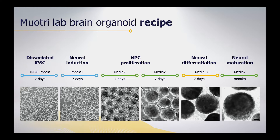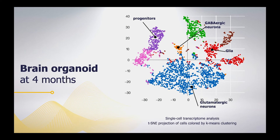We start from single cells and end up with about 5 million cells after a while. The diversity of cells changes dynamically over time depending on what stage you're looking at. At around four months, the vast majority of cells are glutamatergic excitatory neurons. We have a pool of progenitor cells continuing to produce neurons, glial cells mostly astrocytes are forming, and we start to see some markers for GABAergic neurons — though they won't become functionally inhibitory until around 6 to 7 months.